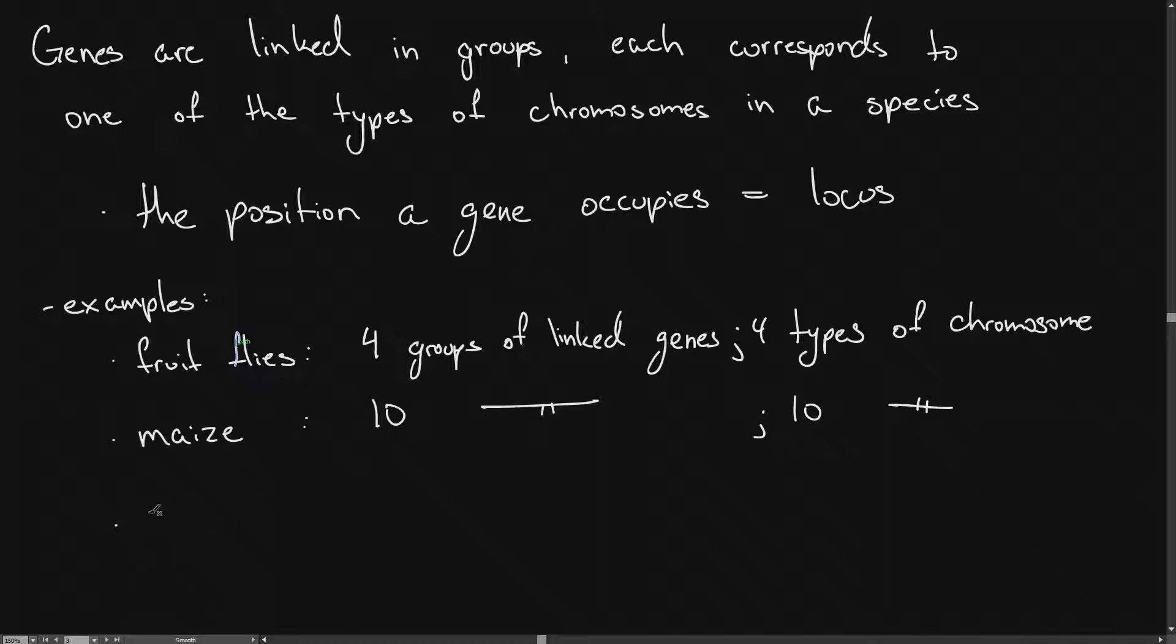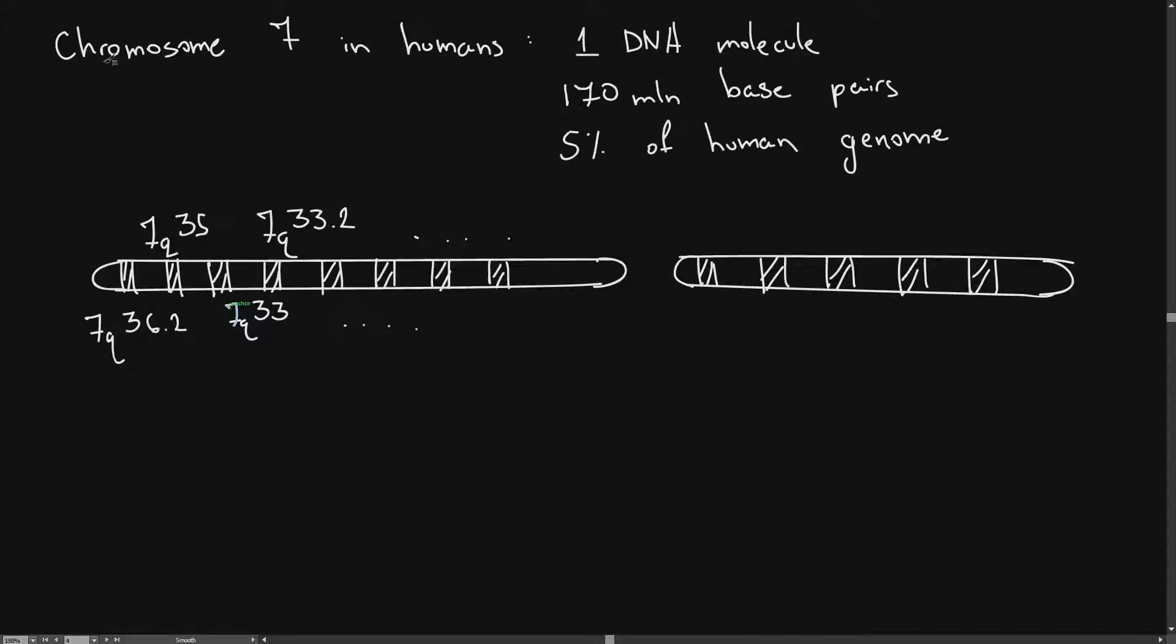And finally, humans, so homo sapiens, have 23 groups of linked genes and 23 types of chromosome. This final example is chromosome 7 in a human.